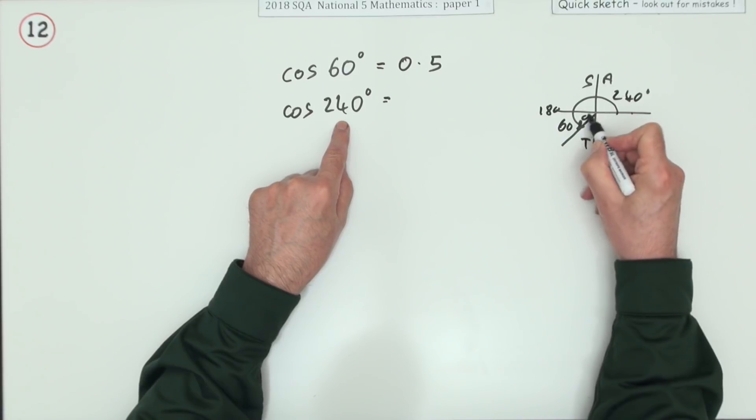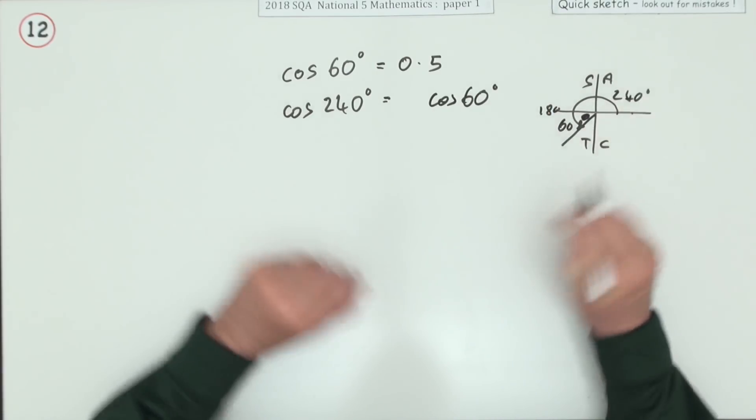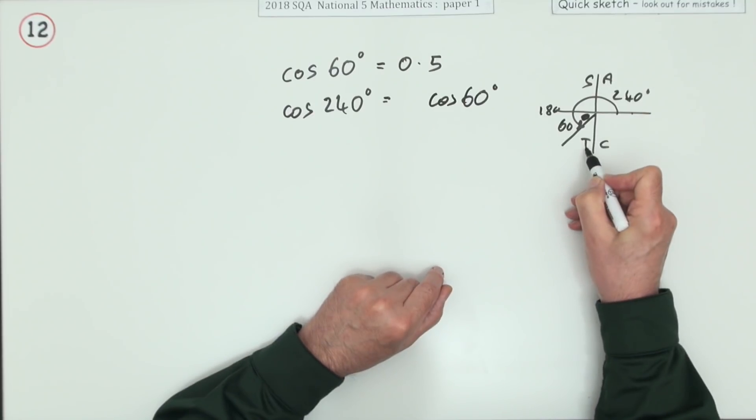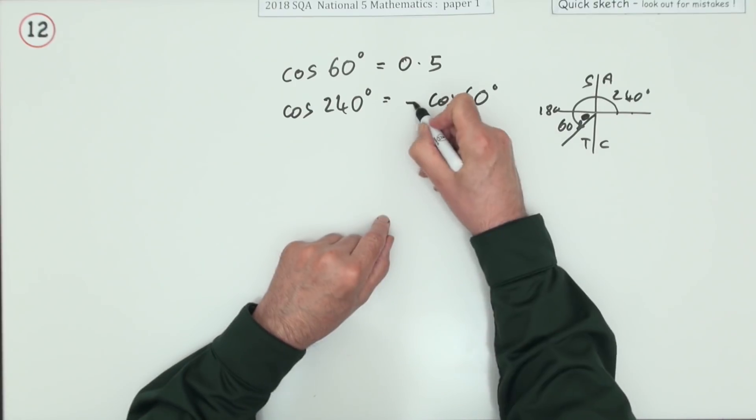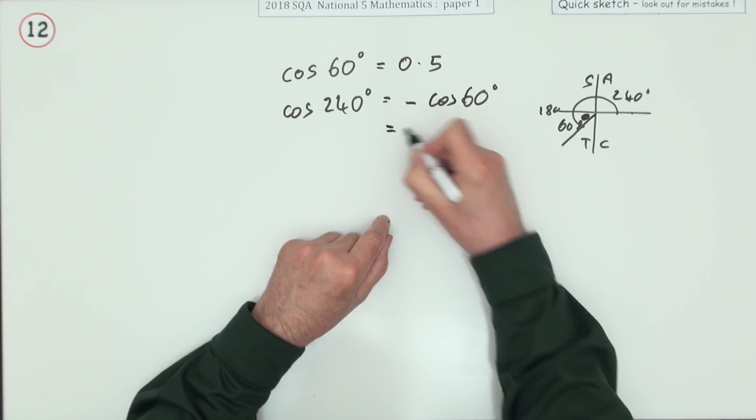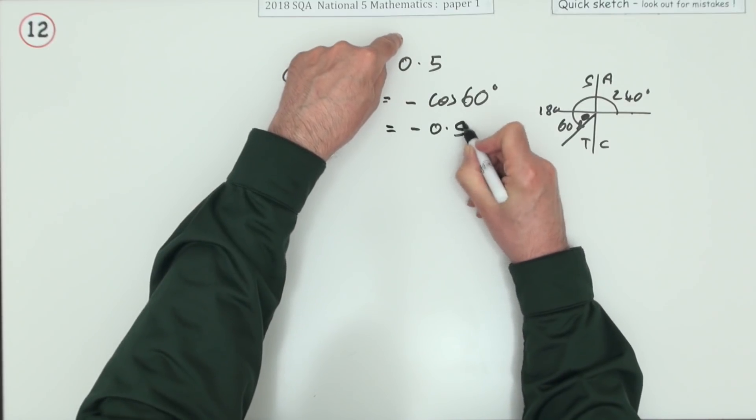So the cos of 240—the operating angle is 60—is the same as cos 60, unsurprisingly. However, only the tangent's positive there, so when the cos ventures in, it'll be negative. So the answer must be the negative of this: negative 0.5.